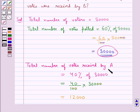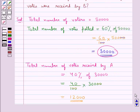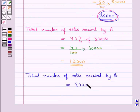So total number of votes received by A is equal to 12,000. Now let's find out the total number of votes received by B. This is equal to the total number of votes polled, that is 30,000, minus the total number of votes received by A, which is 12,000. So this is equal to 18,000.